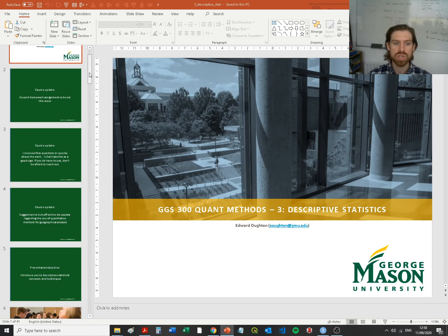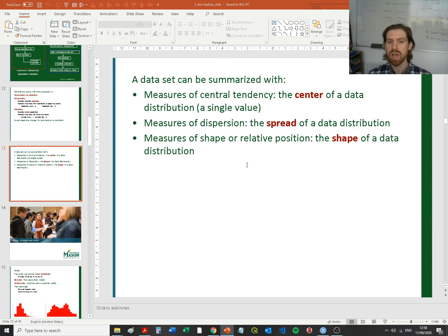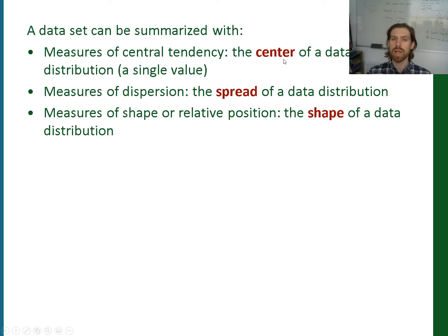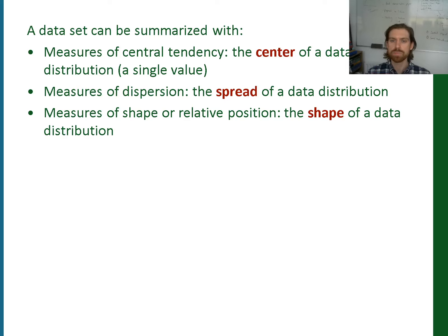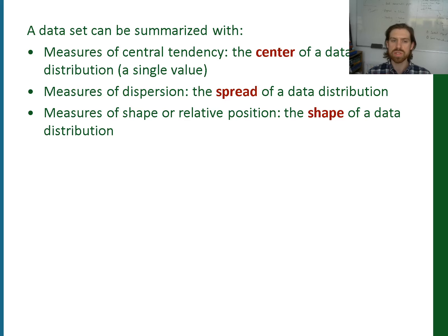You'll remember from the previous lecture that there are essentially three different ways in which we can summarize a data set. We're able to describe data based on measures of central tendency — single values such as the mode, the median, or the mean. We can also describe data sets based on the spread of data: the variance, the standard deviation, or the coefficient of variation. And finally, we have the actual shape of the distribution, dependent on how skewed it is or the degree of kurtosis. We're going to be going through these three areas within the R code.